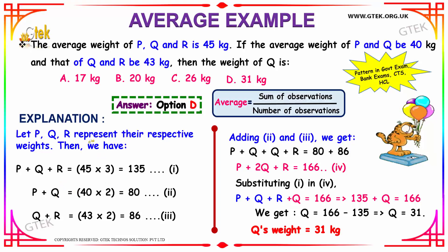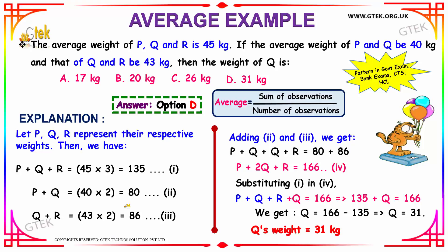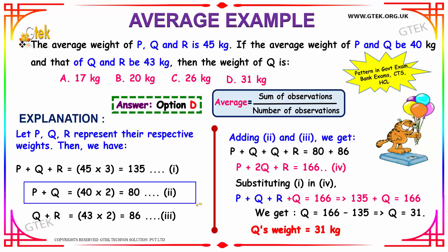Similarly, for P and Q the average weight is 40, so the sum of observations is 40 into 2, since we have two people's weights, giving 80. For Q and R, the sum of observations is 43 into 2, that is average multiplied by number of observations, giving 86.